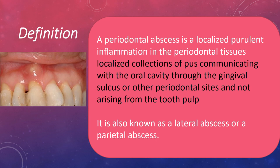What is a periodontal abscess? It is a localized purulent inflammation in the periodontal tissues — more specifically, a localized collection of pus communicating with the oral cavity through the gingival sulcus or other periodontal sites, and not arising from the pulp. It is also known as lateral abscess or parietal abscess, as it is situated in the lateral aspect of the root.